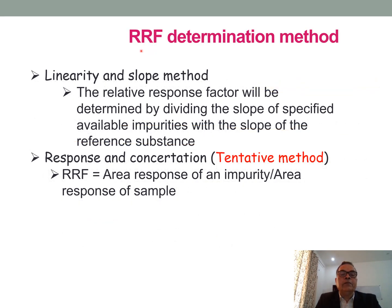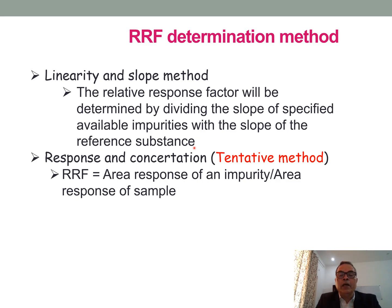Now I will discuss the RRF determination method. There are various methods for calculating RRF. Among them, the linearity and slope method is widely used in the industry. The Relative Response Factor is determined by dividing the slope of a specified available impurity with the slope of the reference substance. The question comes: how is the slope determined? The Response and Concentration method is a tentative method where RRF equals the area response of an impurity divided by the area response of the sample.